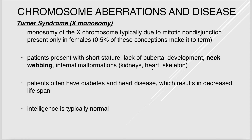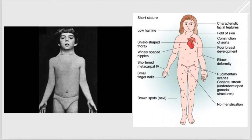Turner syndrome — X-monosomy — is the only monosomy compatible with life, where the female has only one X chromosome, typically due to non-disjunction. A very small percentage make it to term. Patients usually have normal intelligence but may have behavioral problems or learning disabilities, lack of pubertal development, internal malformations, diabetes, heart disease, skeletal and muscle problems, and neck webbing — a hallmark of Turner syndrome.